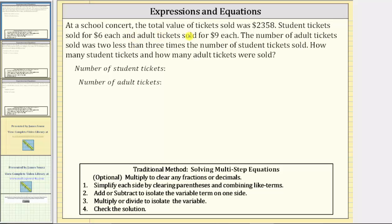At a school concert, the total value of the tickets sold was $2,358. Student tickets sold for $6 each, and adult tickets sold for $9 each. The number of adult tickets sold was two less than three times the number of student tickets sold. How many student tickets and how many adult tickets were sold?